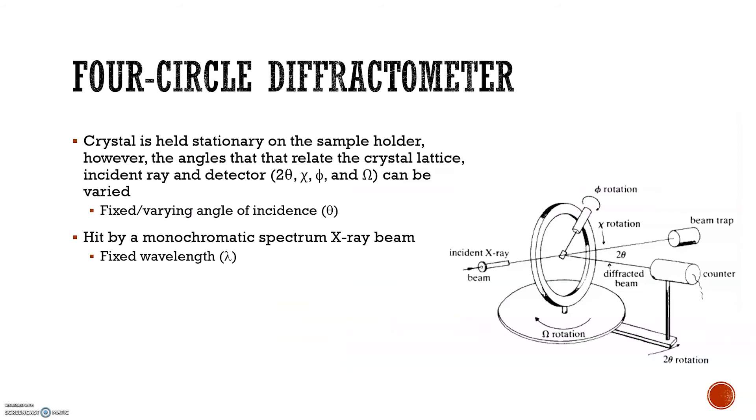In this method, the crystal is held stationary on the sample holder. However, the angles that relate the crystal lattice, the incident X-rays, and the detector can be varied. So this has a fixed and a varying angle of incidence. The crystal is hit by a monochromatic spectrum X-ray beam, so the wavelength is fixed.